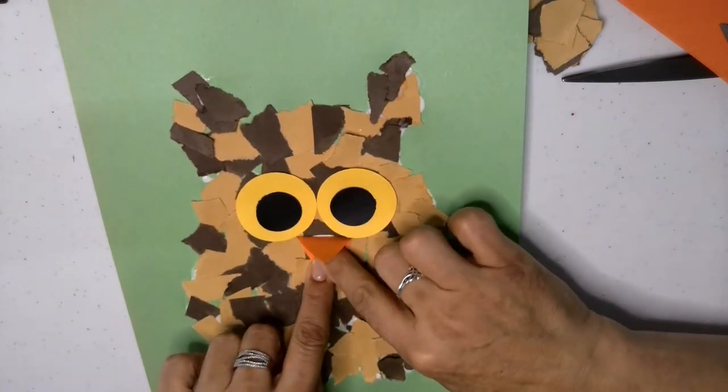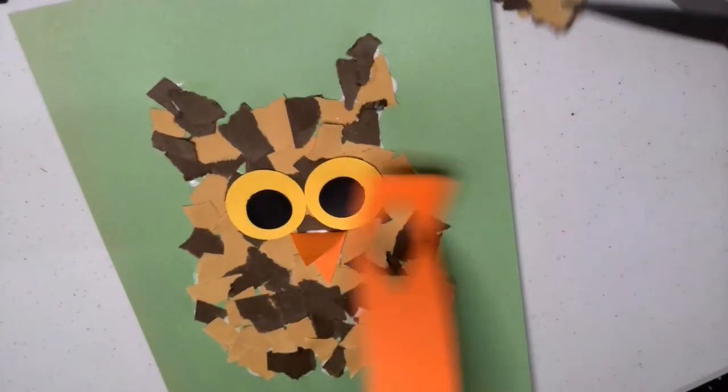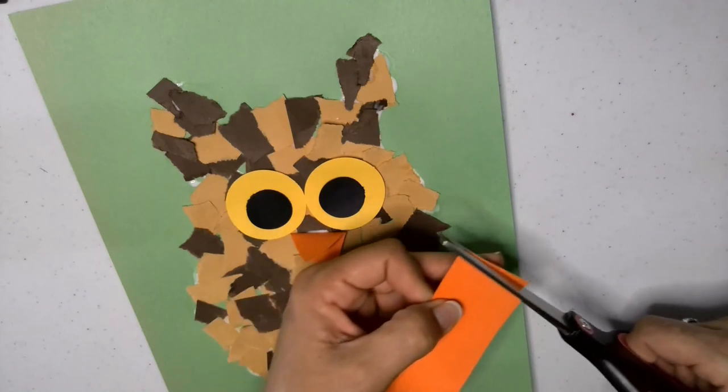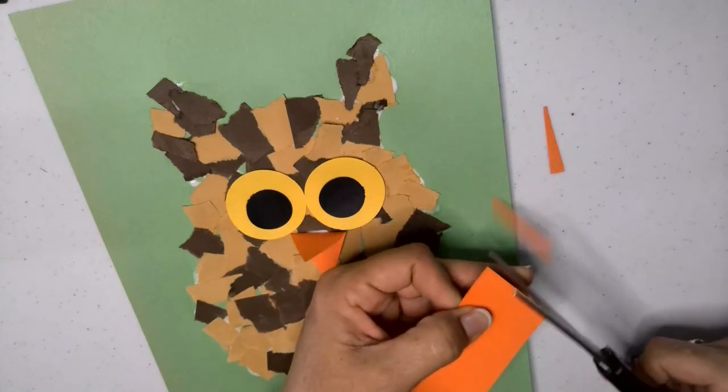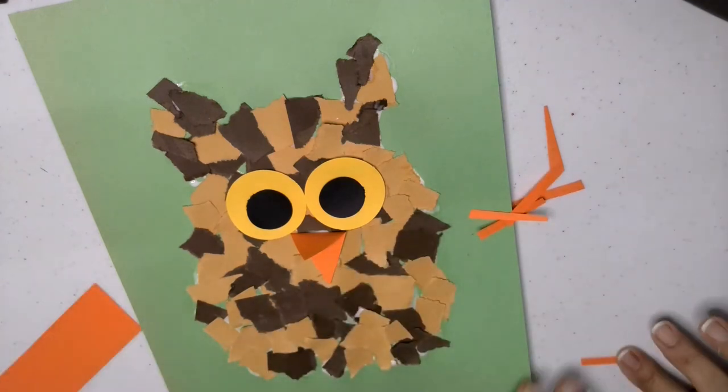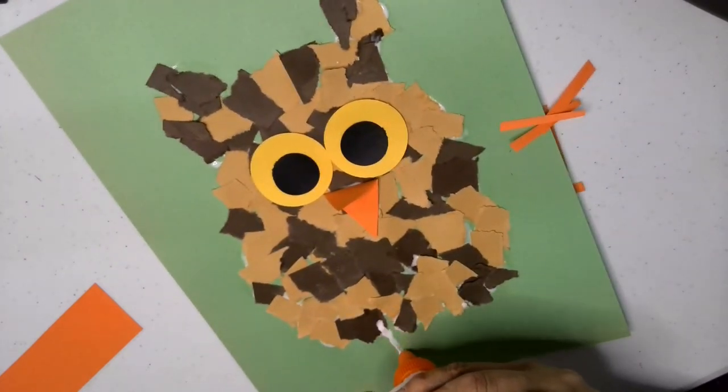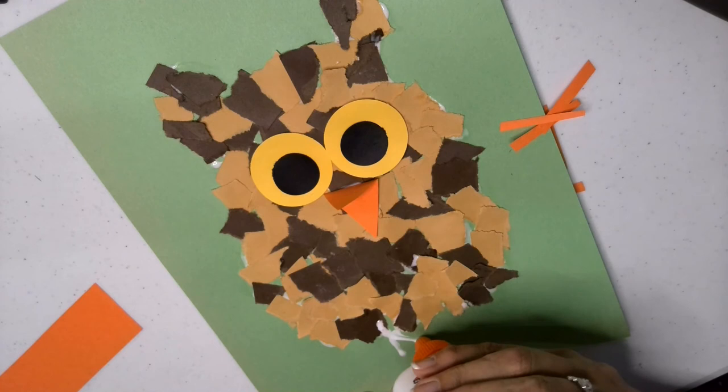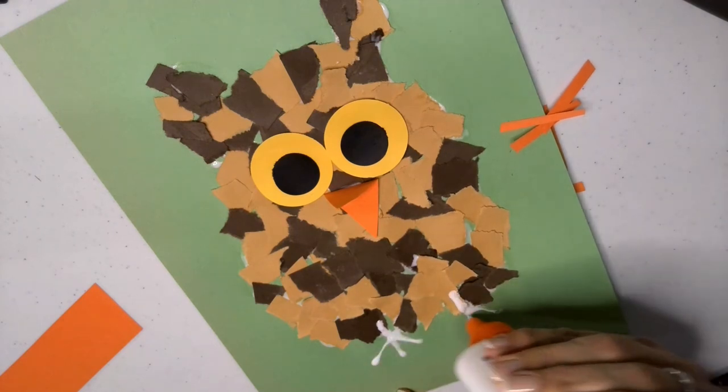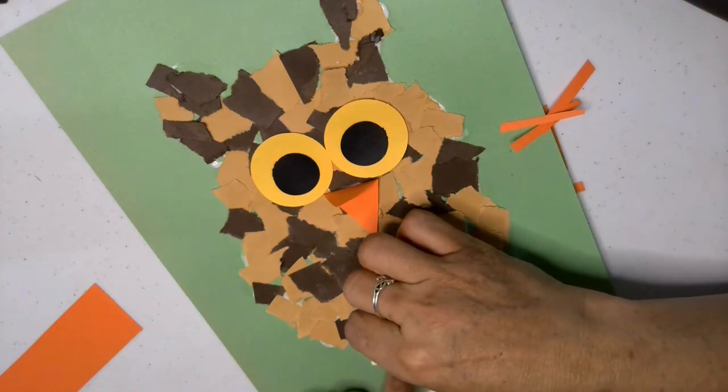Our owl needs little feet, so with the leftover paper, I just cut strips, short strips, and I'm going to need six. And I will create the legs here. And see how I spread the glue first and then I do the paper, but you don't have to do it that way. I just don't want to get all kinds of glue on my fingers.